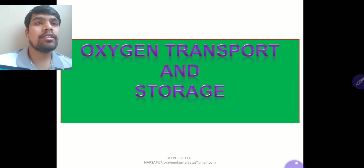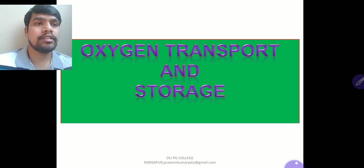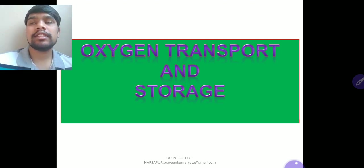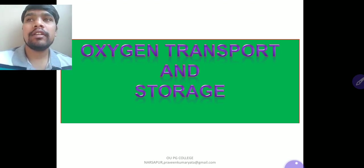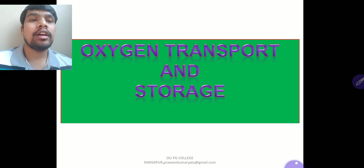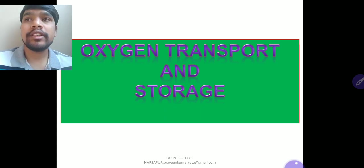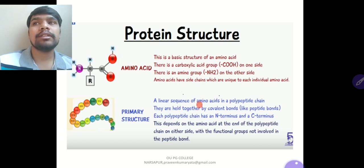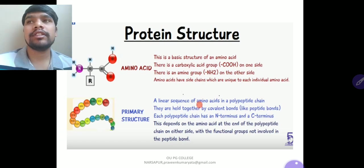The next part of this unit is oxygen transport and storage. In higher-level animals like humans, oxygen transport is mainly by hemoglobin and storage is mainly by myoglobin, both of which contain iron metal. Let us examine the basic structure of these proteins.